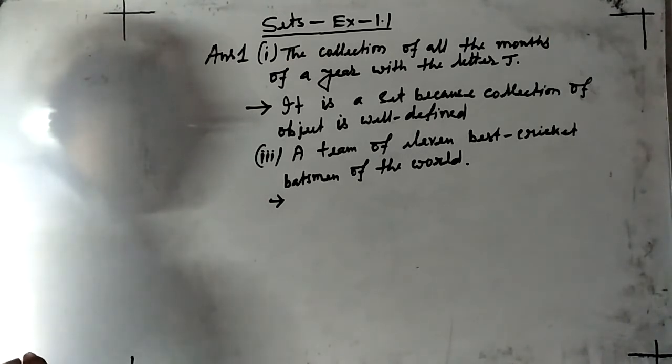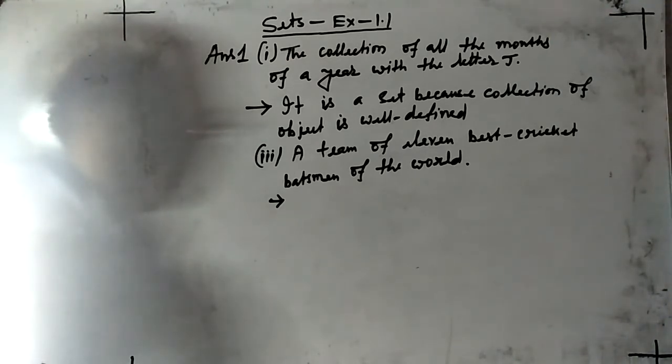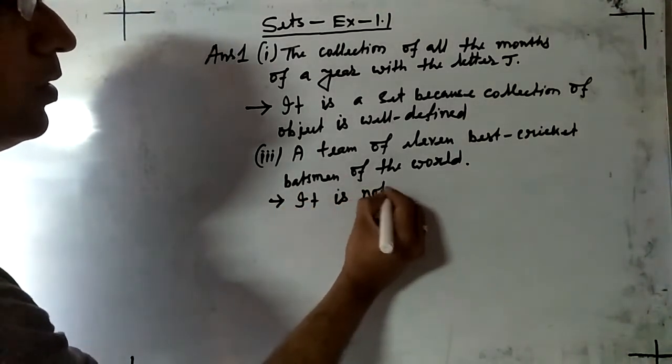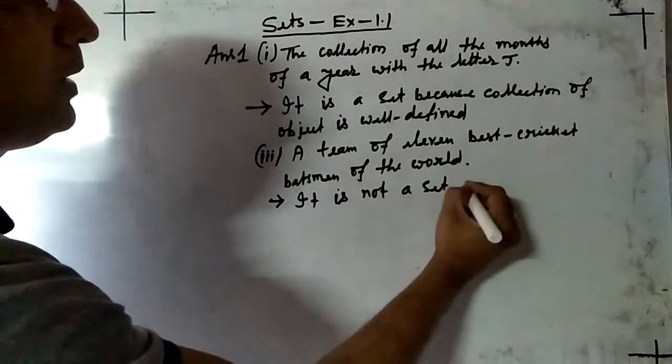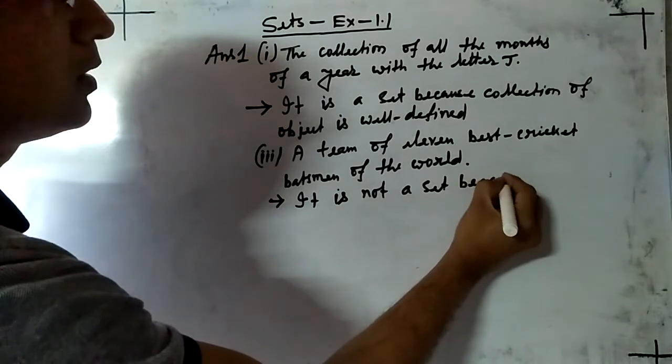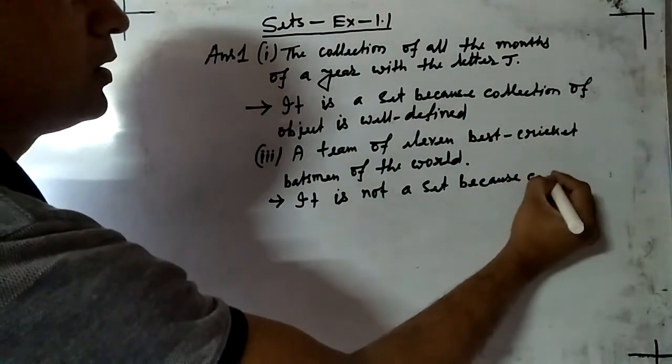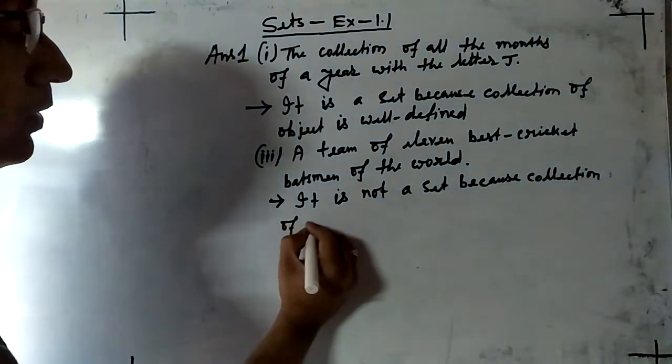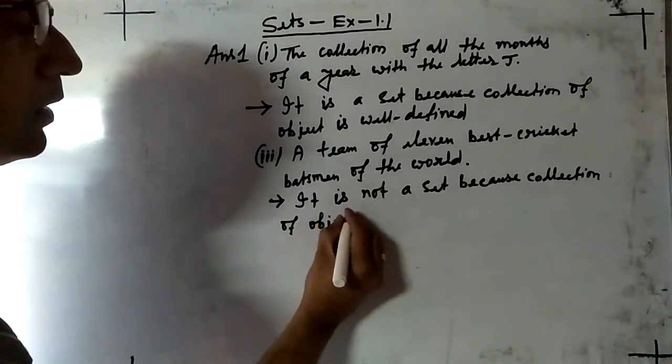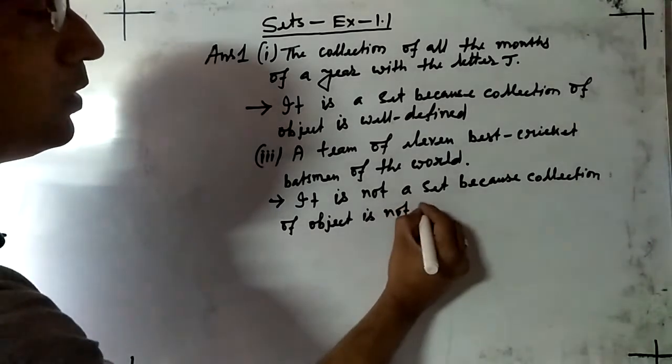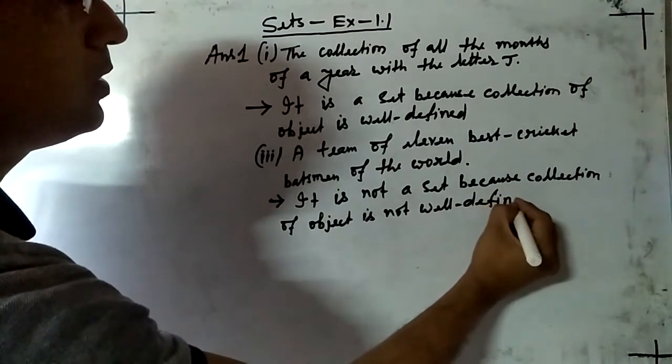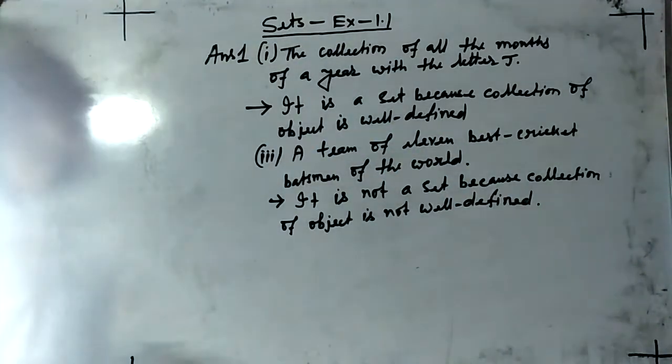That means here collection of objects is not well-defined, so it is not a set. It is not a set because collection of objects is not well-defined. We have to give reason also to answer question number 1.